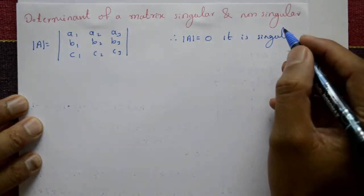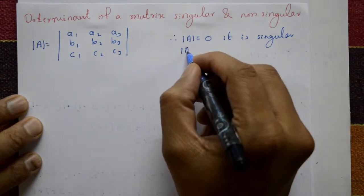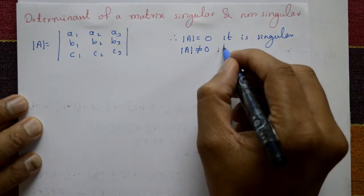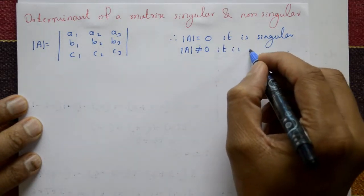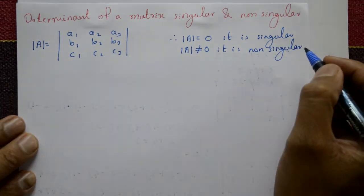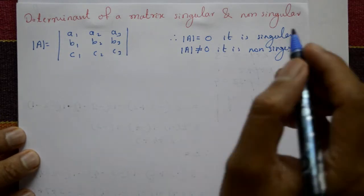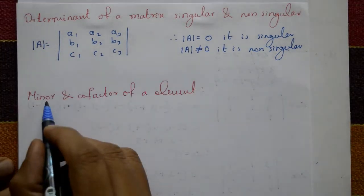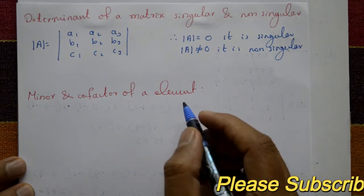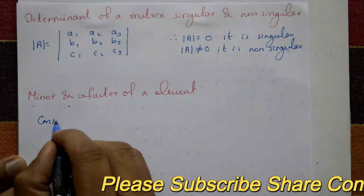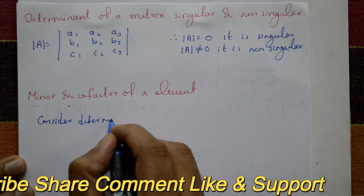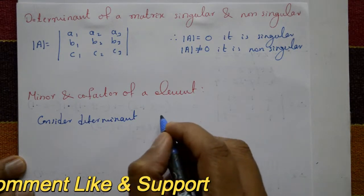If the determinant of A is not equal to 0, then the matrix is non-singular. That's all — it's very simple. Next: minor and cofactor of a matrix. Consider a determinant given as A1, A2, A3 / B1, B2, B3 / C1, C2, C3.